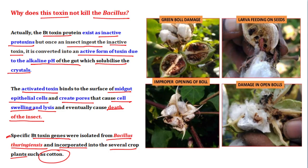On the right side, you can see green boll damage, larva, seeds, cotton seeds — the bollworm damages the floral bud and the crop, causing a lot of productivity loss. So creating an insecticidal or pest-resistant plant is a very important step.